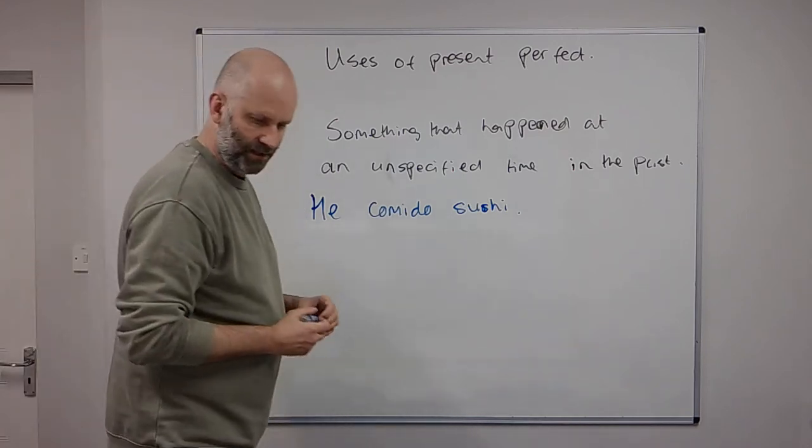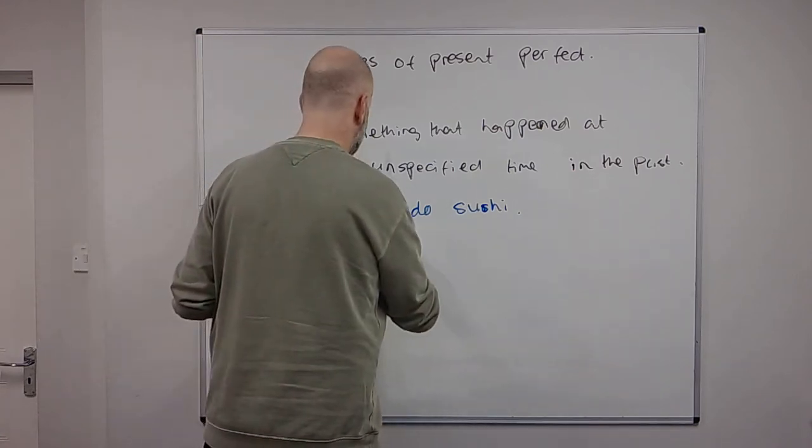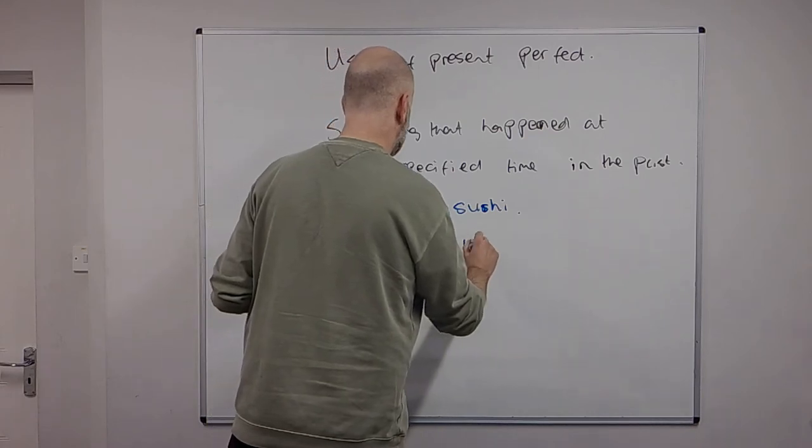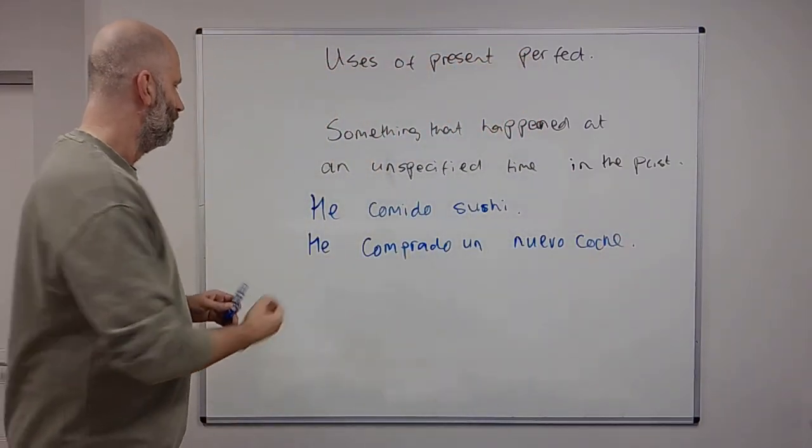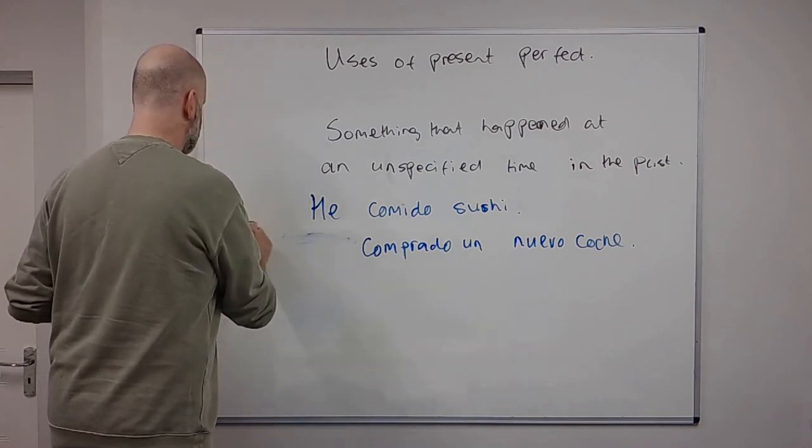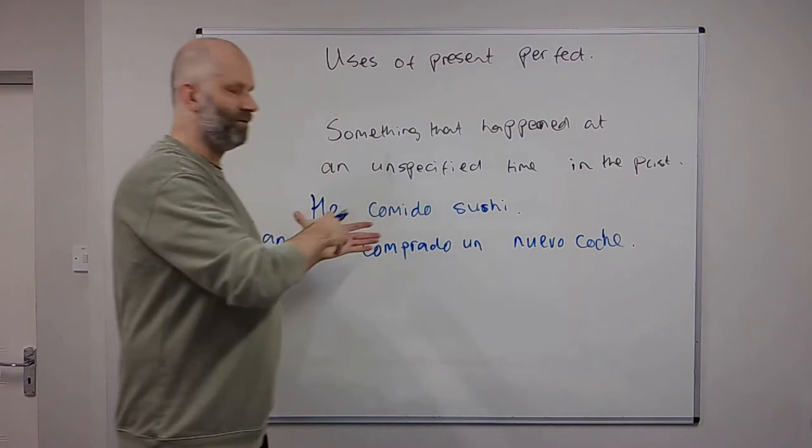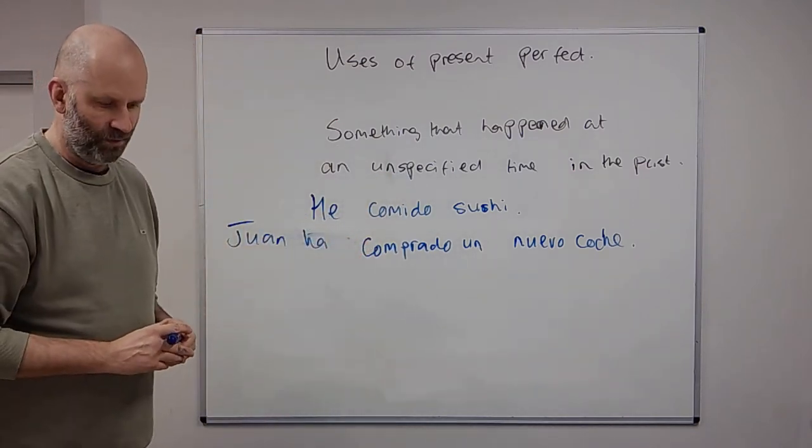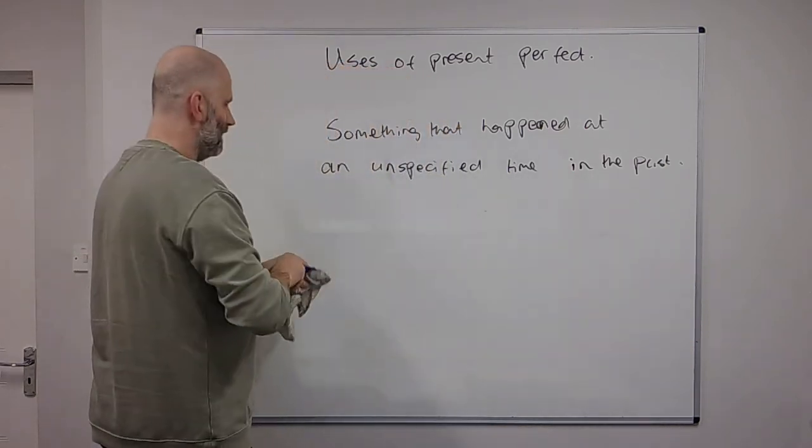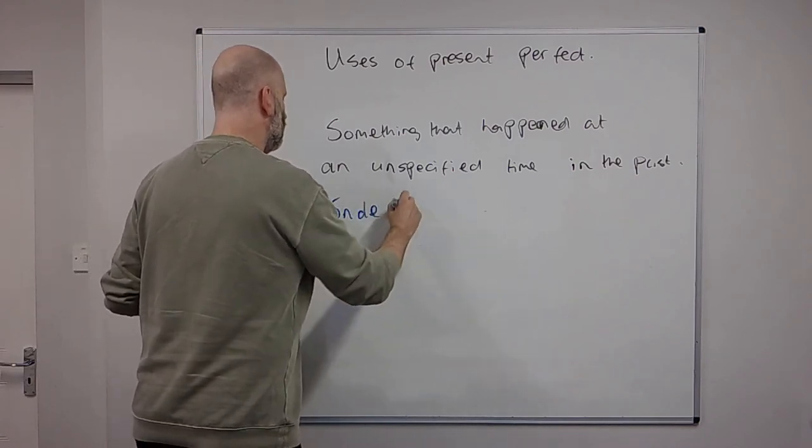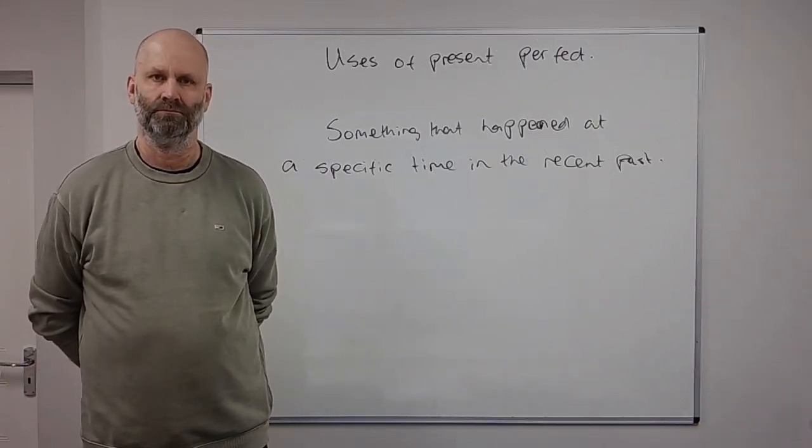Or you could say something like he comprado un nuevo coche. Juan ha comprado un nuevo coche. So this is something that's done before now but we're not saying exactly when it happened. You could ask somebody dónde has estado? Where have you been?